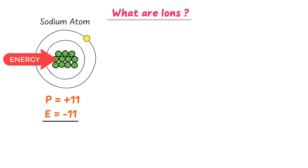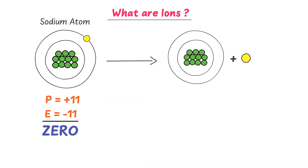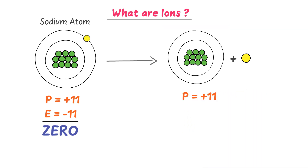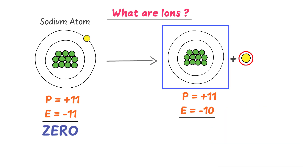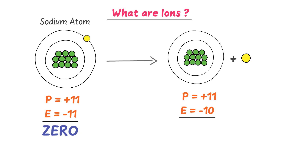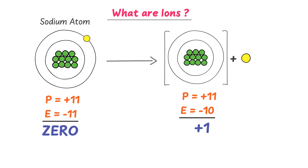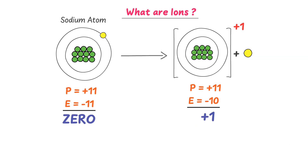Now consider that you provide sufficient energy to this atom. As a result, it loses one electron. Now if I count the number of protons and electrons in the sodium atom, I will get proton = +11 and electron = -10, because the sodium atom has lost one electron. Here, +11 and -10 gives a net charge of +1. So now sodium is a charged particle.